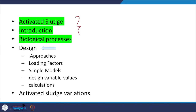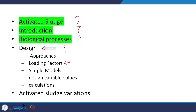Having looked at activated sludge and the biological process, the major aspect is design. Based on thumb rules, depending on how much mass load or waste is coming in, you have factors based on which you can choose the relevant volume. In India, simple models based on calculation and design variable values are more commonly used.